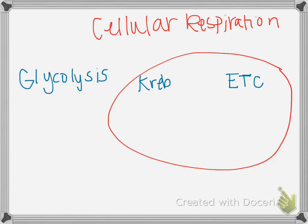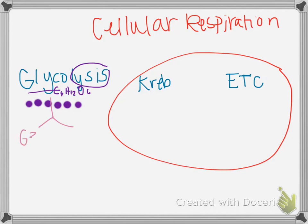The first step is where we take six carbons in glucose — that's C6H12O6. Glycolysis: look at the word — 'sugar break.' We take the sugar and we break it into two G3P molecules. And remember from photosynthesis, G3P is half of sugar. We took sugar and we broke it apart, and now we have two halves of sugar. The G3P has three carbons each.